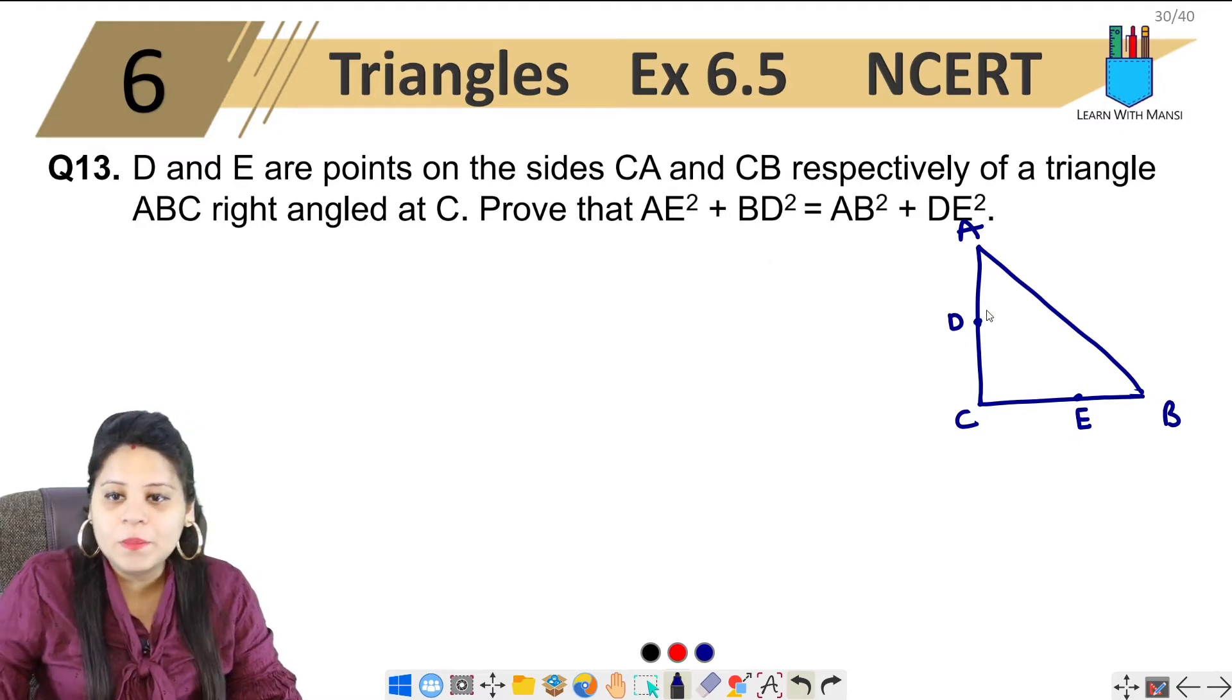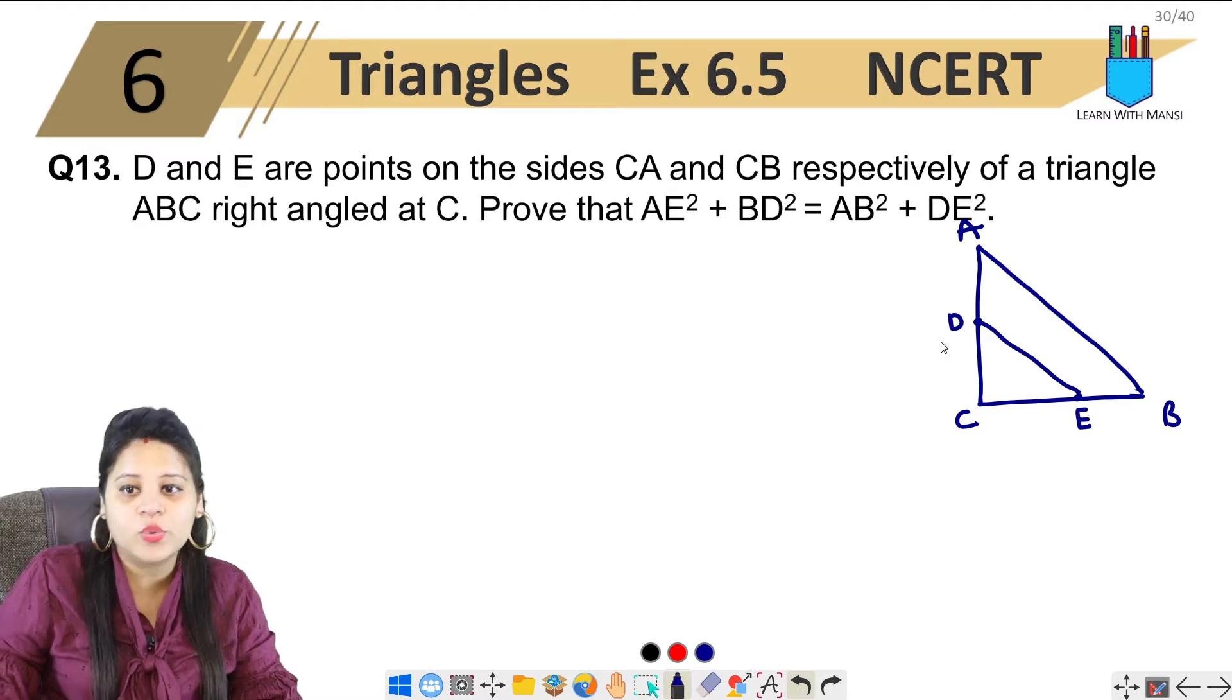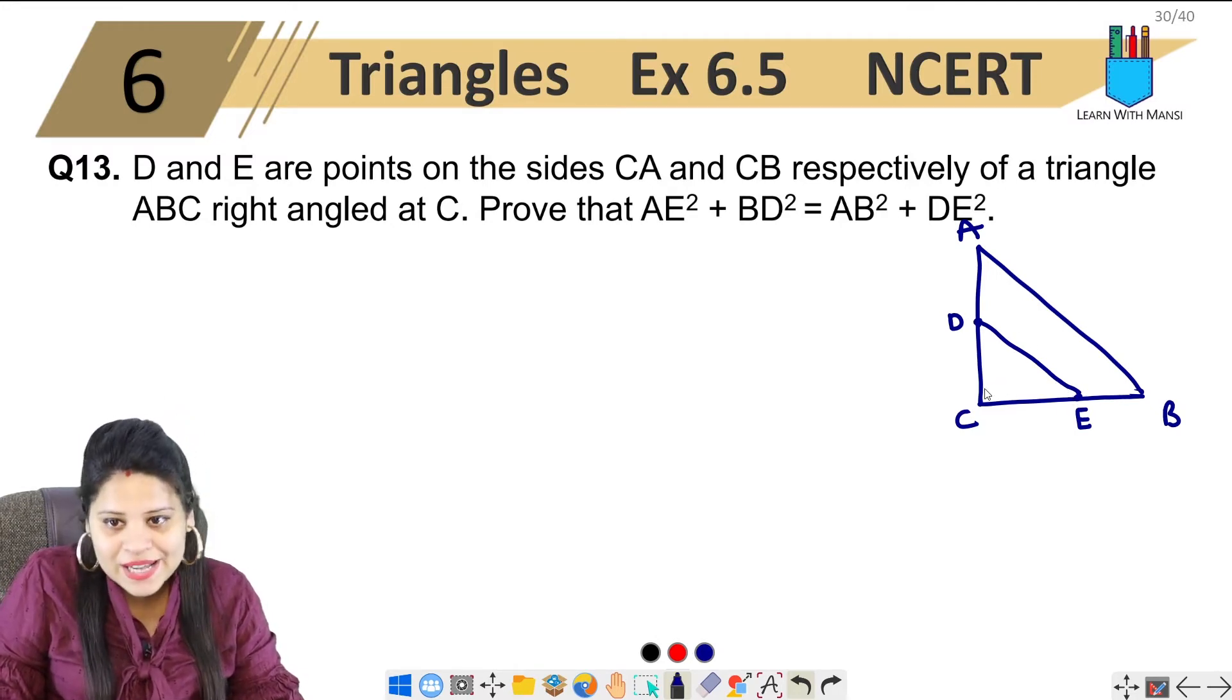Similarly, point E is on CB. Let's suppose here is point E. So if I join these points, first of all notice that DEC is a right triangle because angle C is 90 degrees.